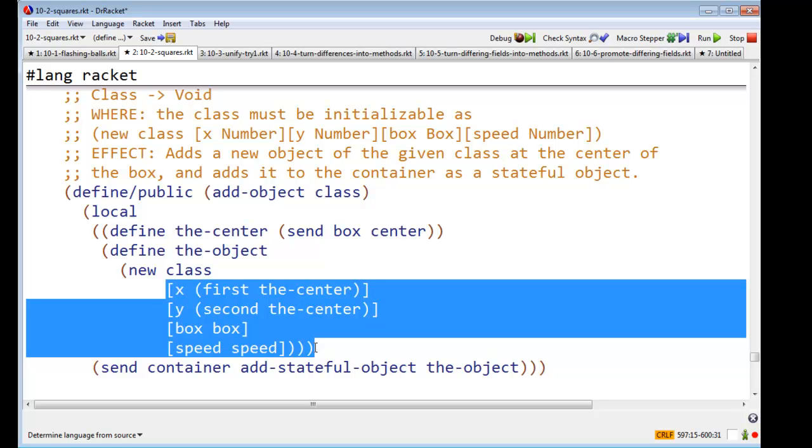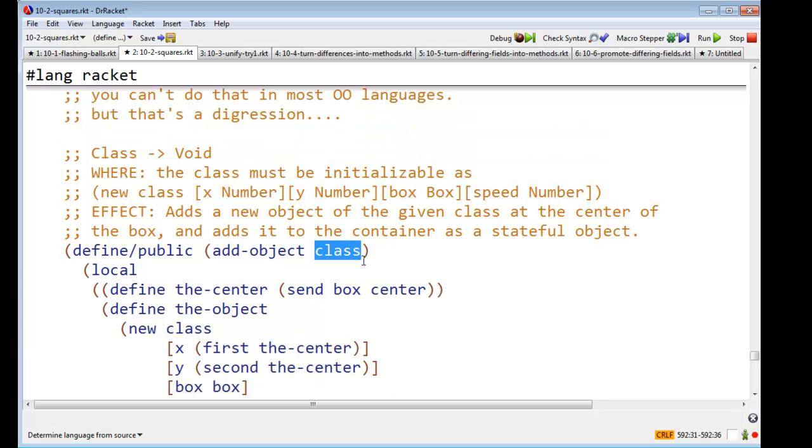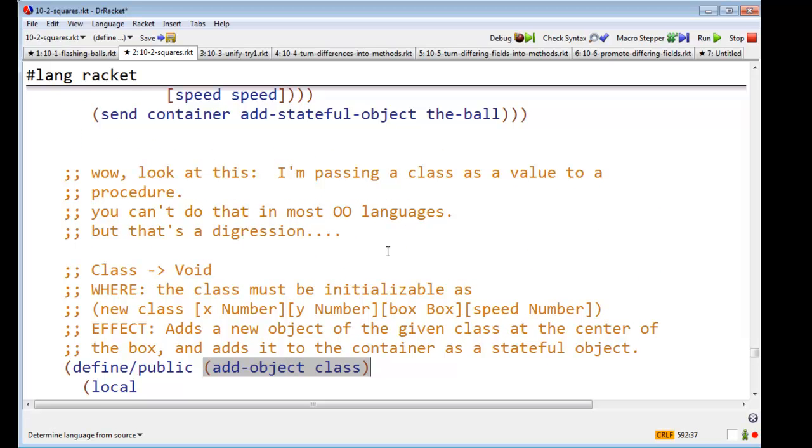The second thing is that I'm using classes as ordinary racket values. This is something you can do in racket. You can't do it in most languages. In most languages, whether it be Java or C sharp or F sharp, probably Ruby and Python, though I might be wrong about that. You just can't do that. You can't pass a class, a class name as a value. So racket may be impoverished in some ways, but it's really good in others.